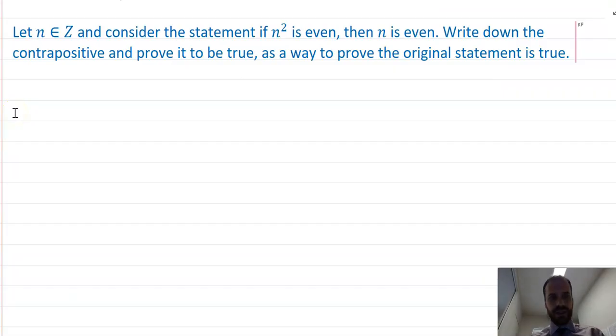Let N be an integer and consider the statement: if N squared is even, then N is even. Write down the contrapositive and prove it to be true as a way to prove the original statement is true. So what we're saying is if N squared is even, that implies N is even. And the contrapositive of that is swapping P and Q and negating them.